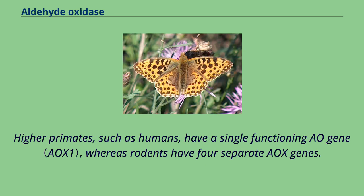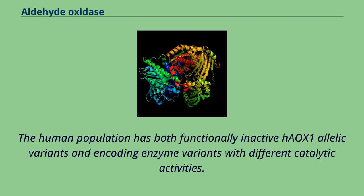Higher primates, such as humans, have a single-functioning aldehyde oxidase gene, whereas rodents have four separate OX genes. The human population has both functionally inactive HOX1 allelic variants and encoding enzyme variants with different catalytic activities.